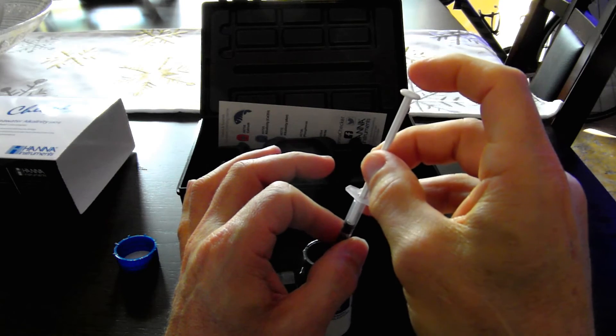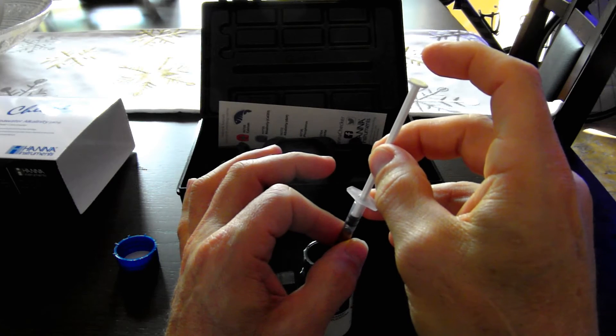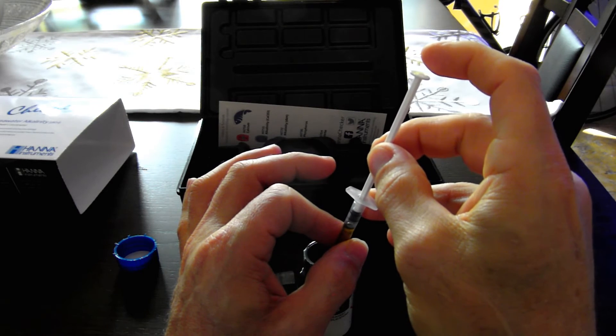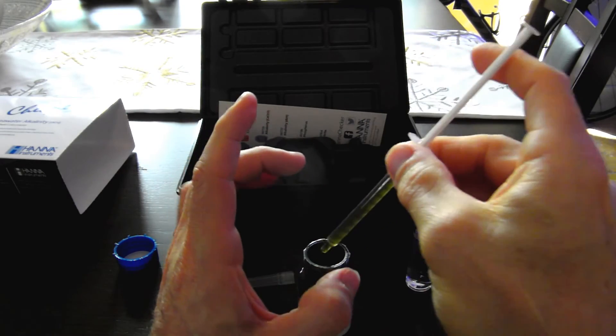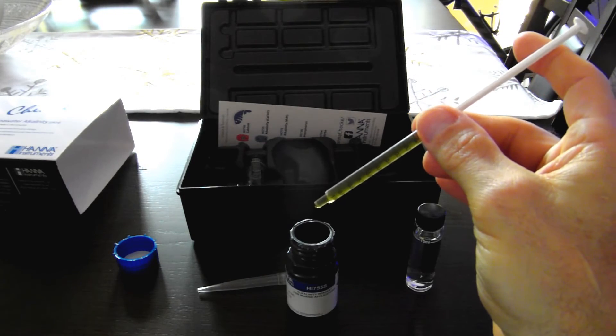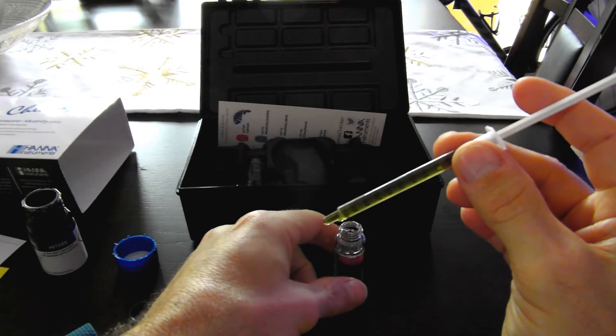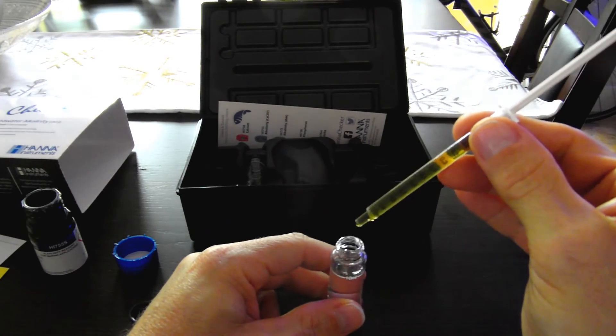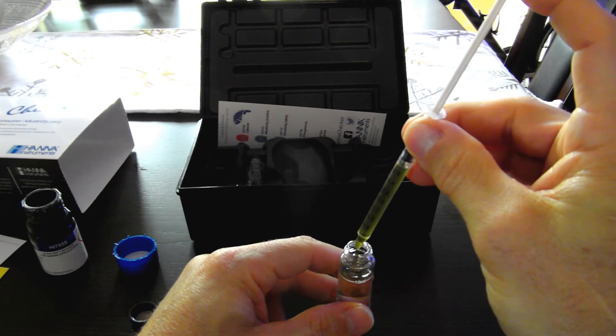I've got a little bit of air in here, so I'm going to make sure that the level of the reagent is at the 1 milliliter line. Here's the reagent, and here's the 10 milliliter sample of aquarium water. I'm going to drip in the full 1 milliliter.